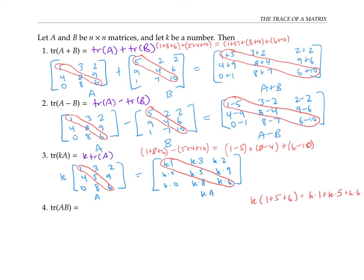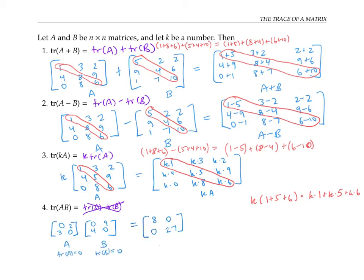Following the pattern, you might expect that the trace of A times B equals the trace of A times the trace of B. But in fact this is not true. For example, here are two by two matrices both of whose trace is zero, but when we take their product, we get a matrix whose trace is definitely not zero.